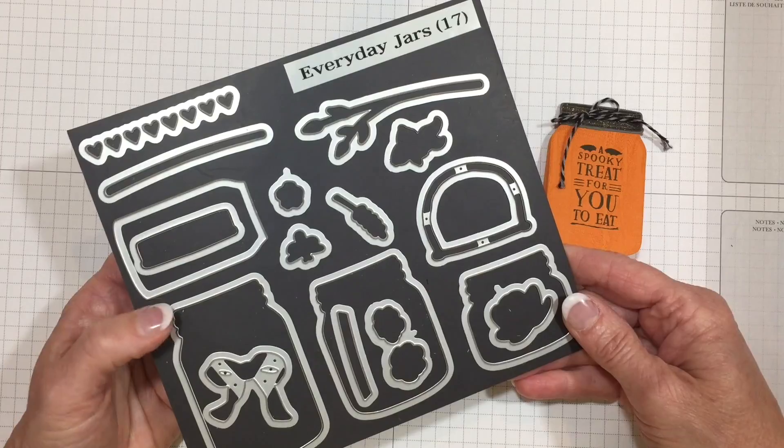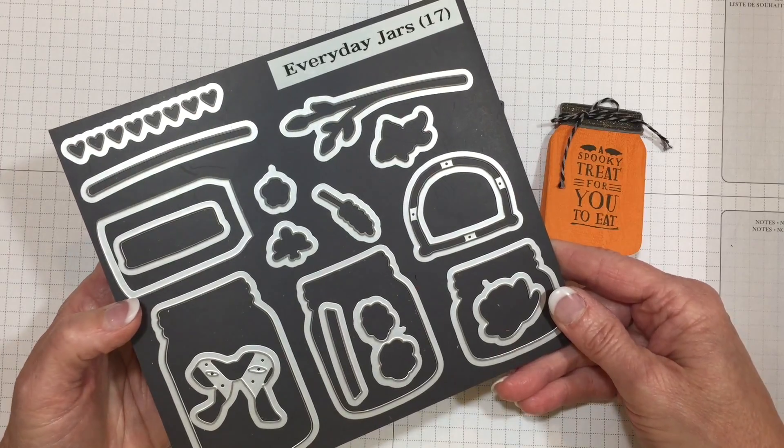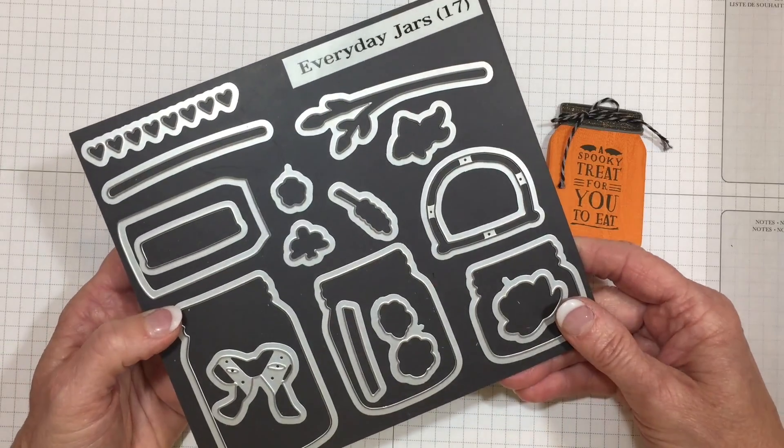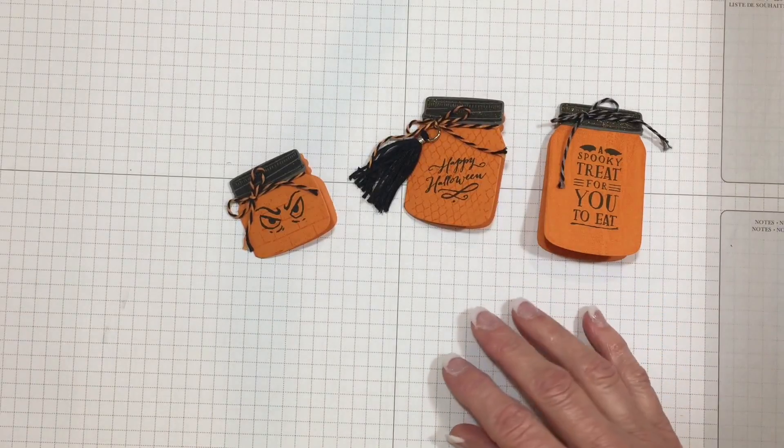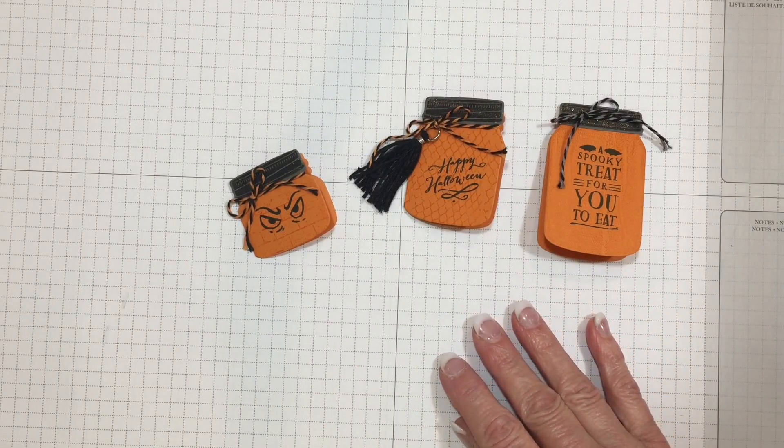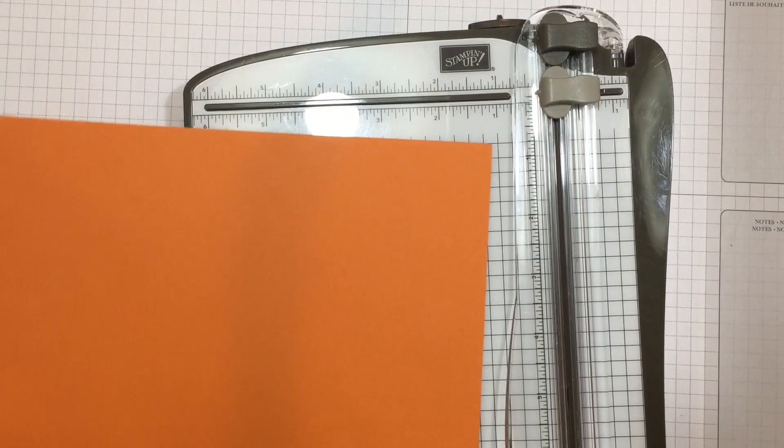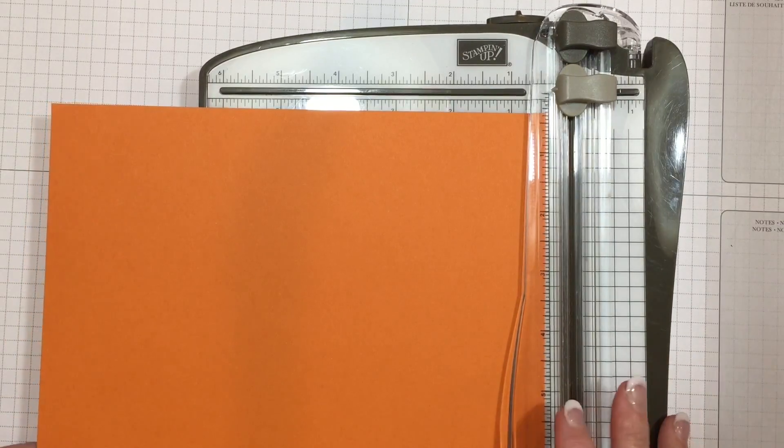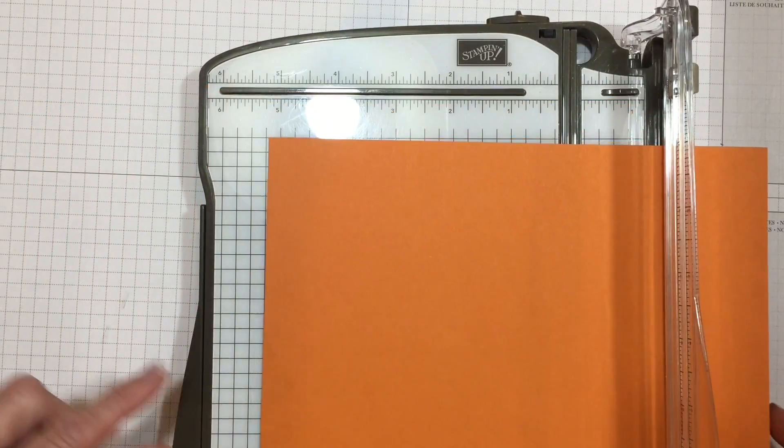We're also going to use the Everyday Framelits from the 2016-17 annual catalog. The first thing I'd like to show you is how to cut your paper. We're going to start with an 8.5 by 11 inch sheet of cardstock.